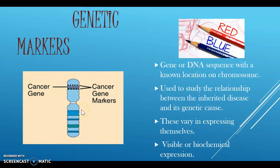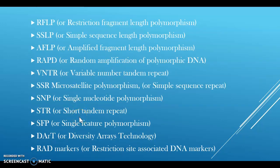There are various types of genetic markers: RFLP (restriction fragment length polymorphism), SSLP (simple sequence length polymorphism), AFLP (amplified fragment length polymorphism), RAPD (random amplification of polymorphic DNA), VNTR (variable number tandem repeats), SSR or microsatellite polymorphism (simple sequence repeat), SNP (single nucleotide polymorphism), STR (short tandem repeat), SFP (single feature polymorphism), DART (diversity arrays technology), and RAD markers (restriction site associated DNA markers).